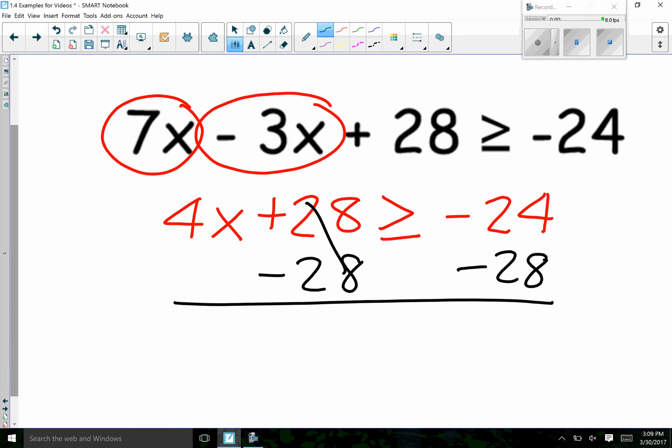And we're left with 4x is greater than or equal to negative 52. And then our last step is to divide by 4.